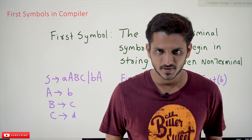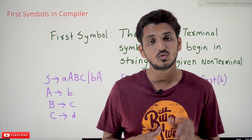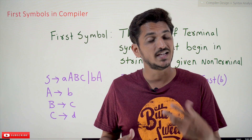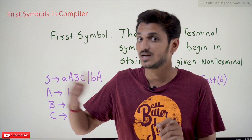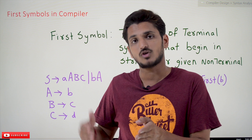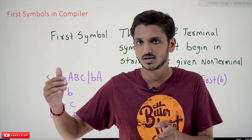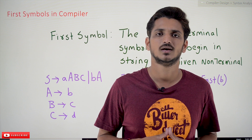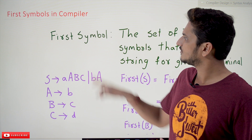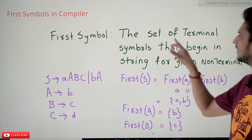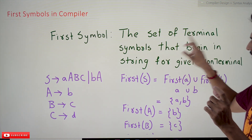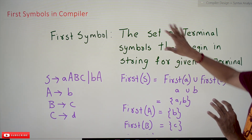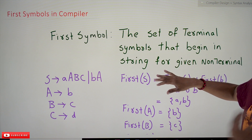Hi, welcome to Learning Monkey. I am Raghu. In this class we will discuss how to identify FIRST symbols for a given context-free grammar. The use of identifying these FIRST symbols we will understand in our coming classes when we discuss about LL(1), top-down and bottom-up approaches for tabular form.